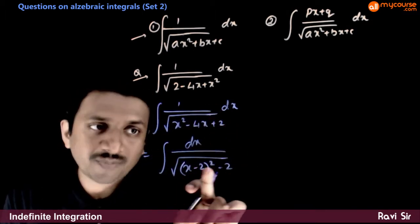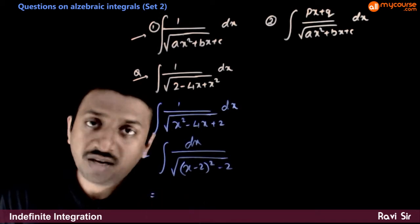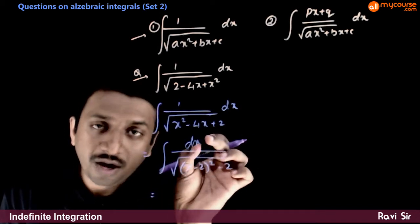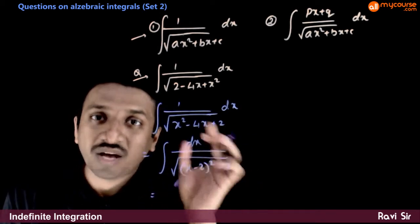So, dx by root of x minus 2 whole square minus 2. That is equal to—so, now this is of the form dx by root of x square minus a square.